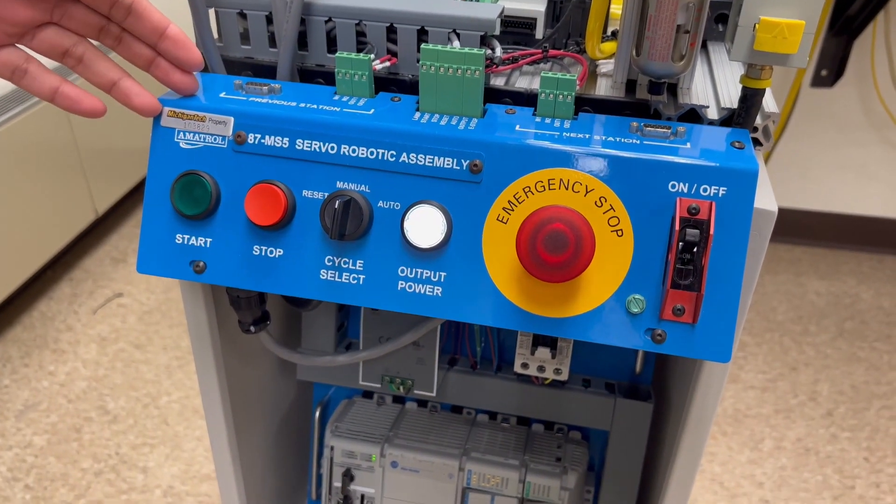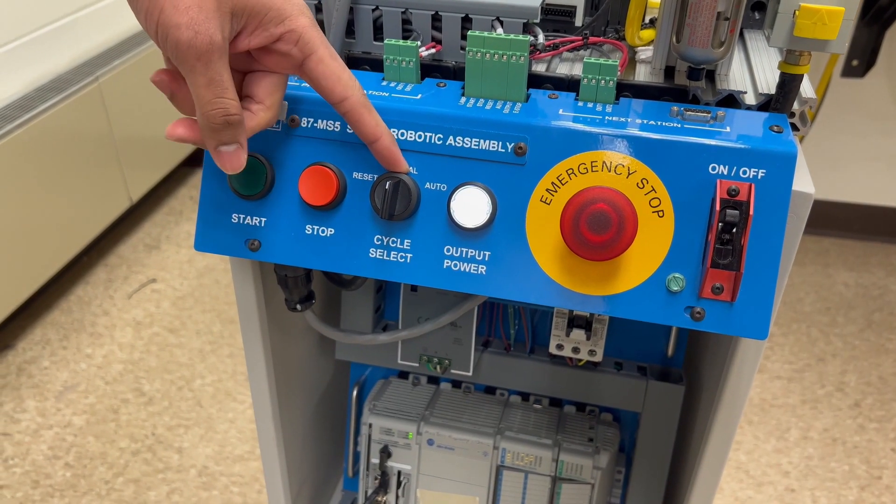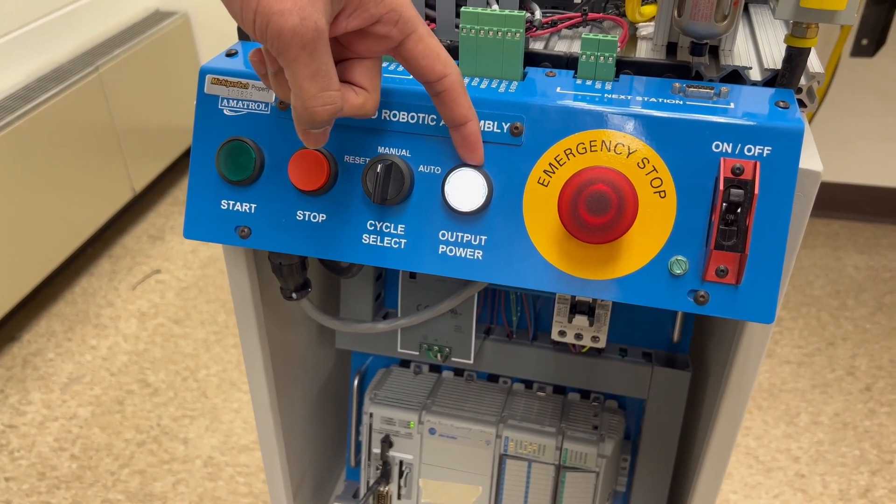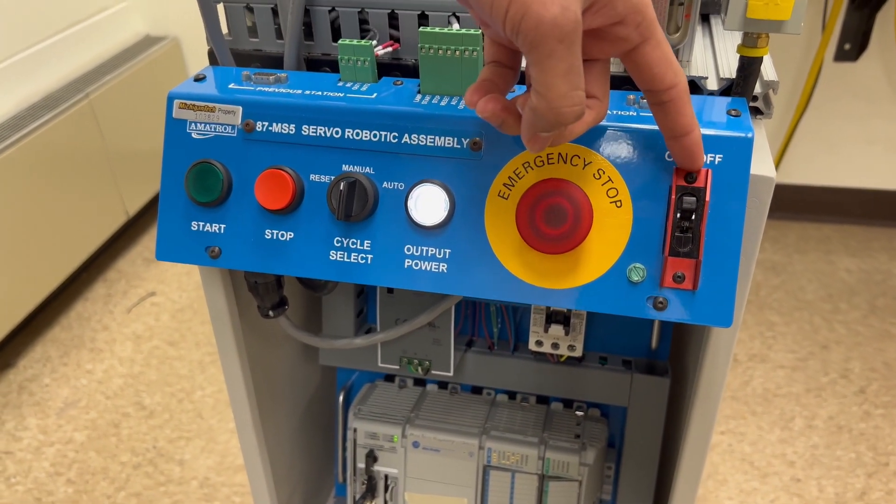And we have different push buttons - start, stop, the selector switch that is used to place the station in manual and auto modes. We have the output power push button, the emergency stop and the on-off switch.